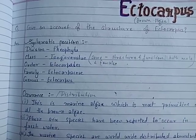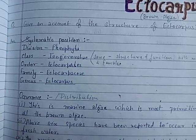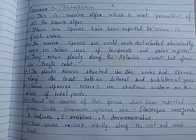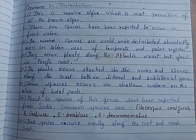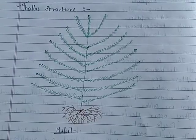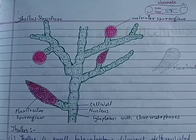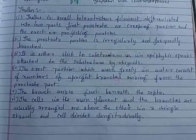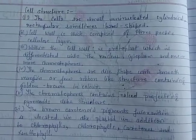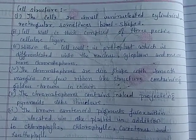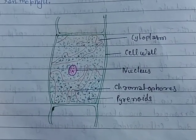The topics covered include: systematic position, occurrence of Ictocarpus, habit, thallus structure, and cell structure of Ictocarpus.